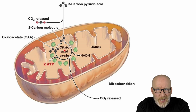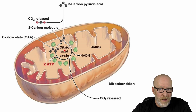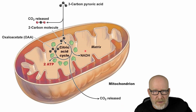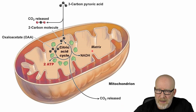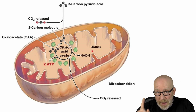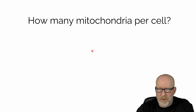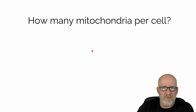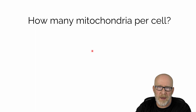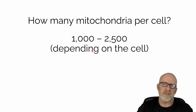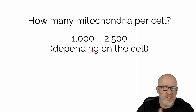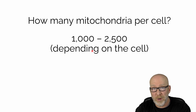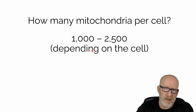We want to keep the citric acid cycle metabolites inside the mitochondria as much as we possibly can. We can't have this stuff leaking out because then ATP production might be damaged in some way. So it happens inside the mitochondria, but here's the question: how many mitochondria do we have per cell in the body? Well, clearly it's estimates and it's going to vary, but anywhere between hundreds and thousands of mitochondria per cell, depending on the cell.